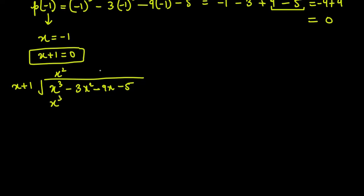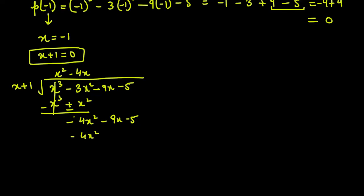Multiply x square by x plus 1: first term x cube, second term x square. After sign change for subtraction: x cube cancels, and minus 3x square minus negative x square gives minus 4x square. Bring down minus 9x minus 5. To make x into minus 4x square, multiply by minus 4x. So minus 4x square appears, and minus 4x multiplied by 1 gives minus 4x.